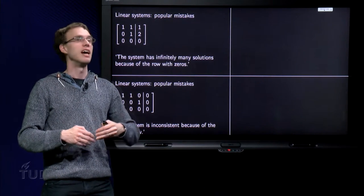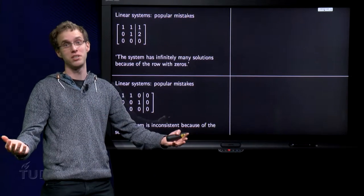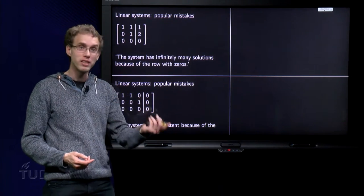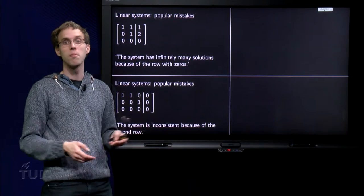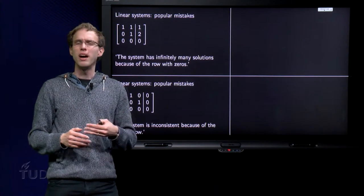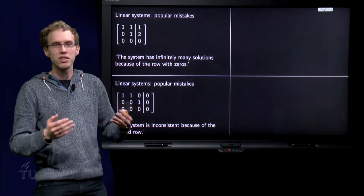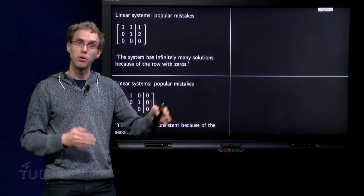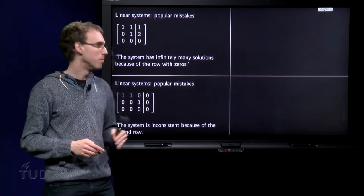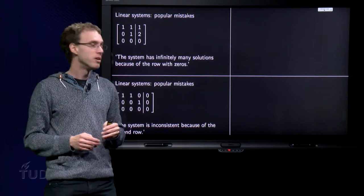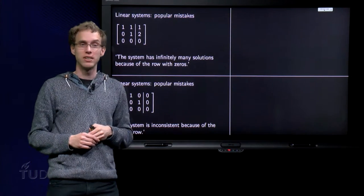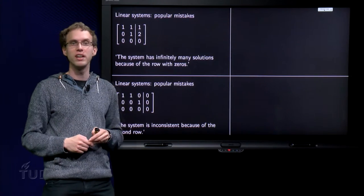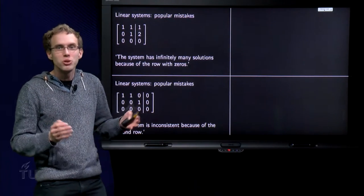We have a homogeneous system. It can never be inconsistent. The second row means 0 times x1 plus 0 times x2 plus 1 times x3 equals 0. So x3 equals 0. It's totally fine. So I understand why students sometimes think it is inconsistent, because if you would interchange the 1 and the 0, if you would have 0, 0, 0, 1, okay, in that case the system would be inconsistent. But that's not the case here. So be careful. You really need to be precise here. So that's the second mistake which you often encounter, that the 1 and the 0 over here are somehow interchanged in the head of a student.